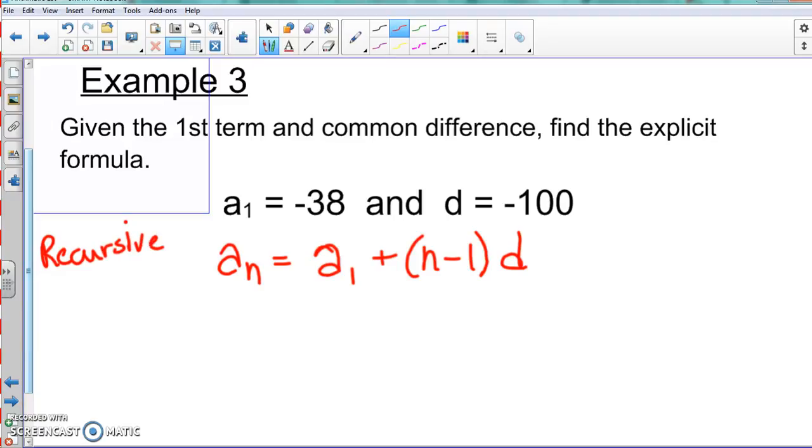So when we get finished with this, it's going to be our explicit formula. We don't know what aₙ is, so we keep that there as aₙ. a₁ we said was that part there—that's -38.